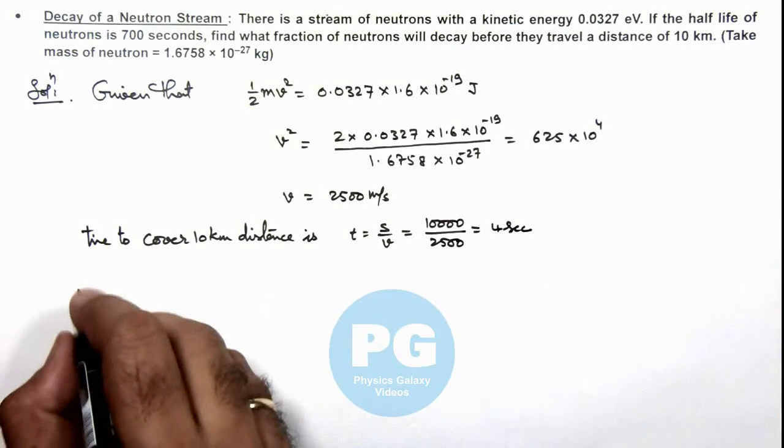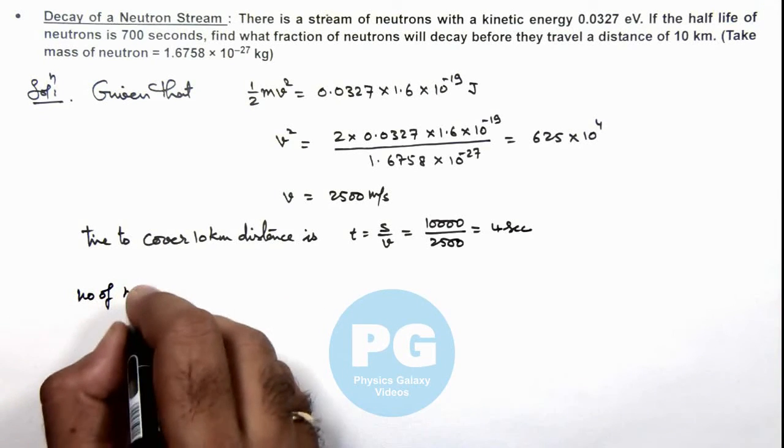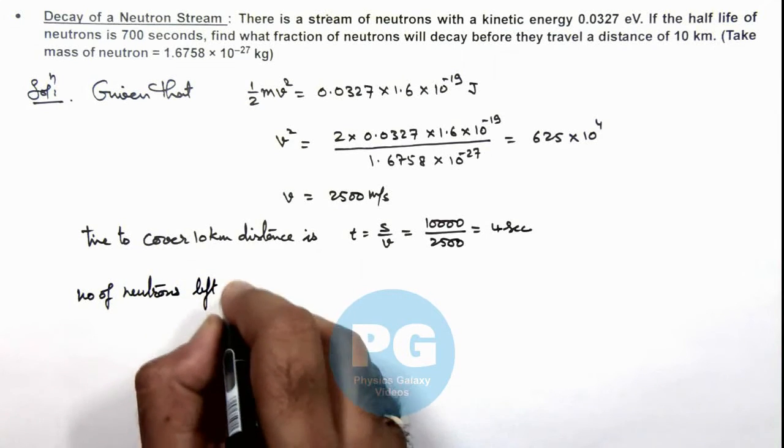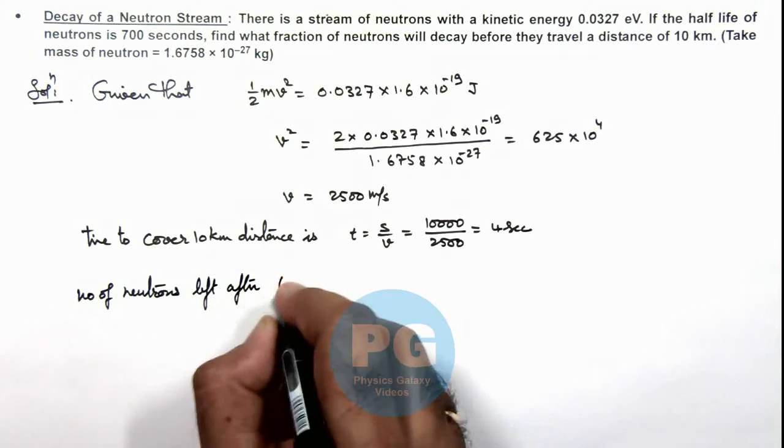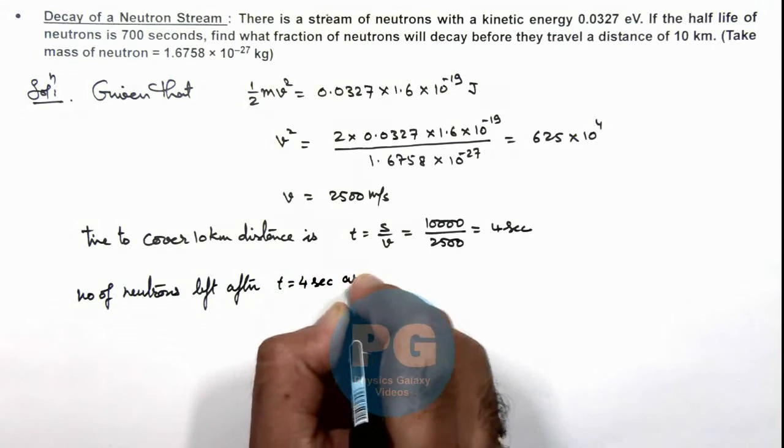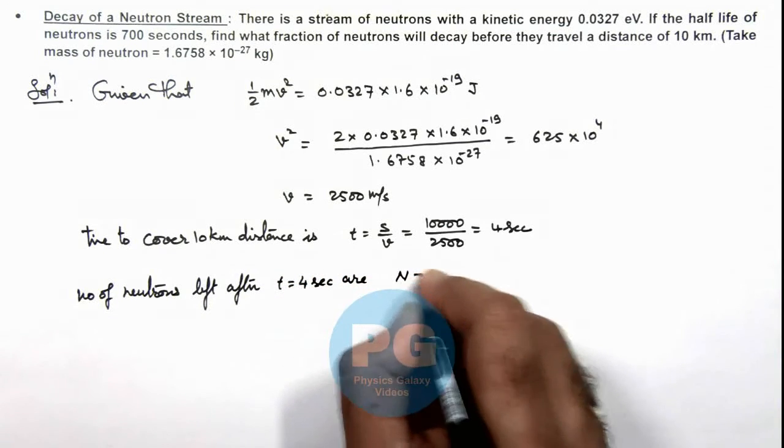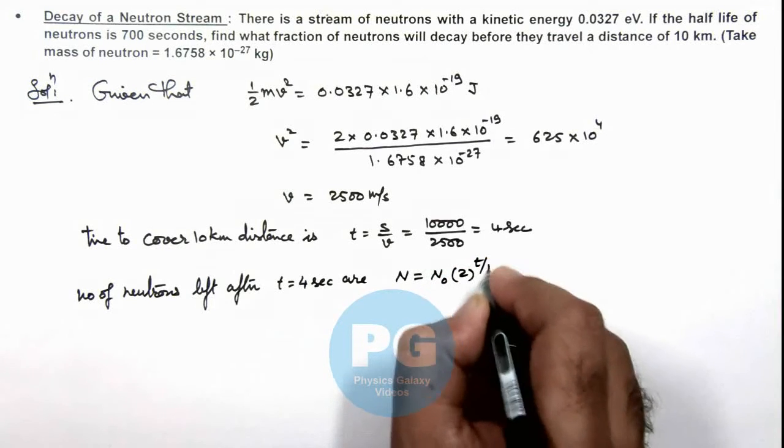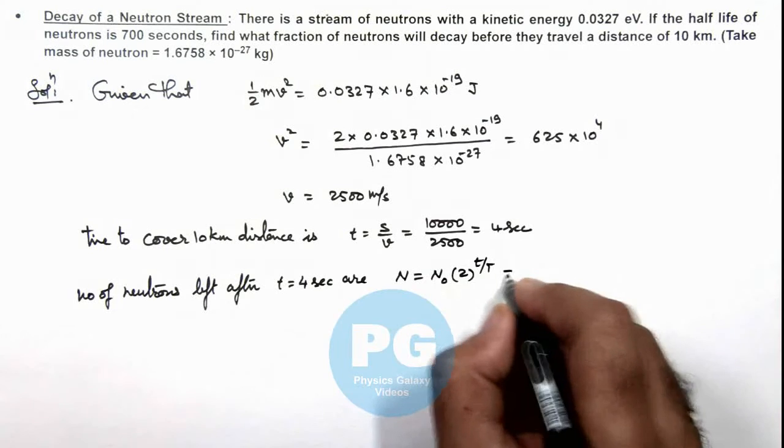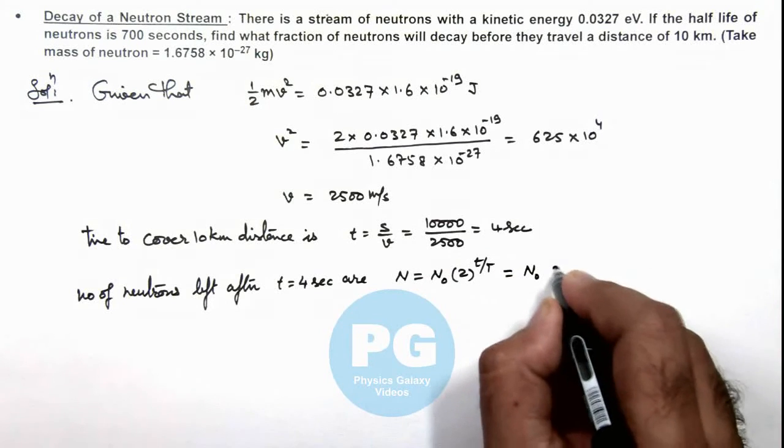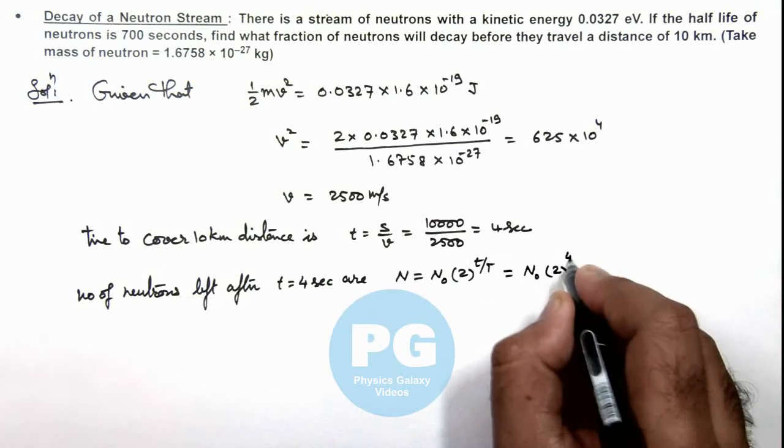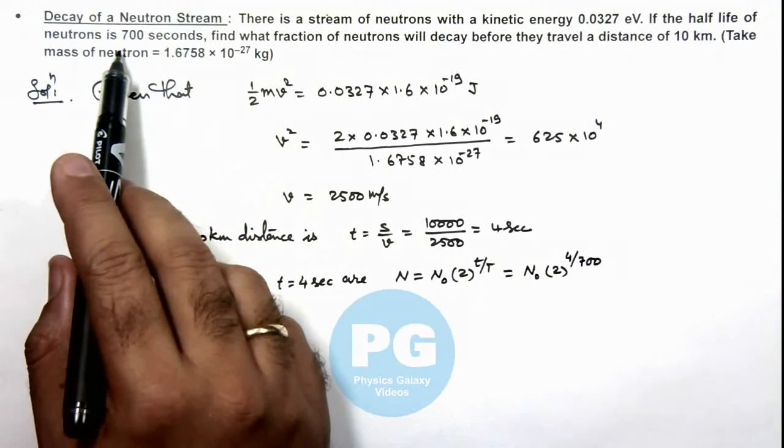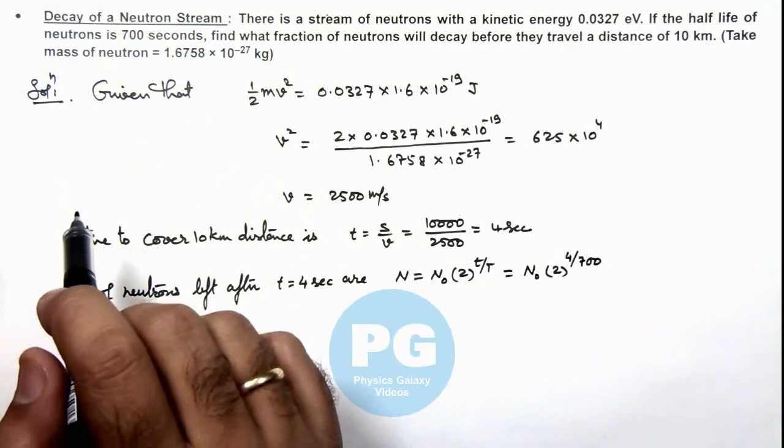Now if we calculate the number of neutrons left after t equals 4 seconds, we can use the decay equation: N = N₀ × 2^(-t/T). On simplifying, after substituting the values this is N₀ × 2^(-4/700), because the half life of neutrons we are given is 700.